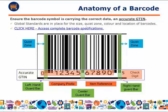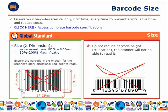You can see that in the barcode there are several different elements. There is the GTIN underneath the barcode — the numbers. There is the quiet zone to the left and right of the barcode, which will be discussed in more detail. There are also guard bars at the end and in the middle of the barcode that help the scanner read the barcode. Global standards are in place to ensure that barcodes scan reliably the first time every time, to prevent errors, reduce costs, and save time.